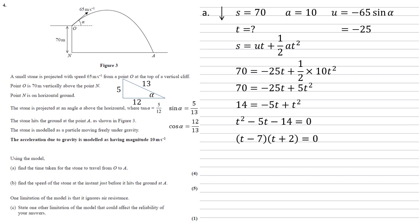Now this would give us two answers. T equals 7 and T equals negative 2. But we're looking for the time it takes for the stone to travel from O to A. So it's got to be a positive number. So we're going to take the positive answer, which is T is equal to seven seconds.